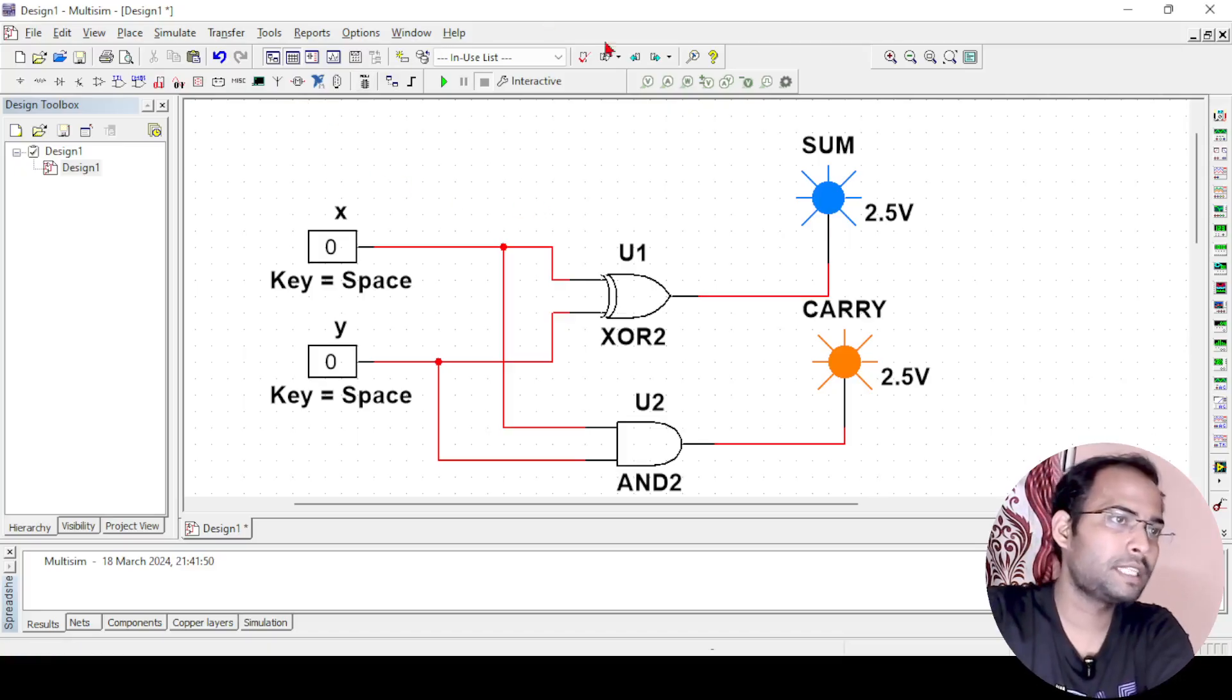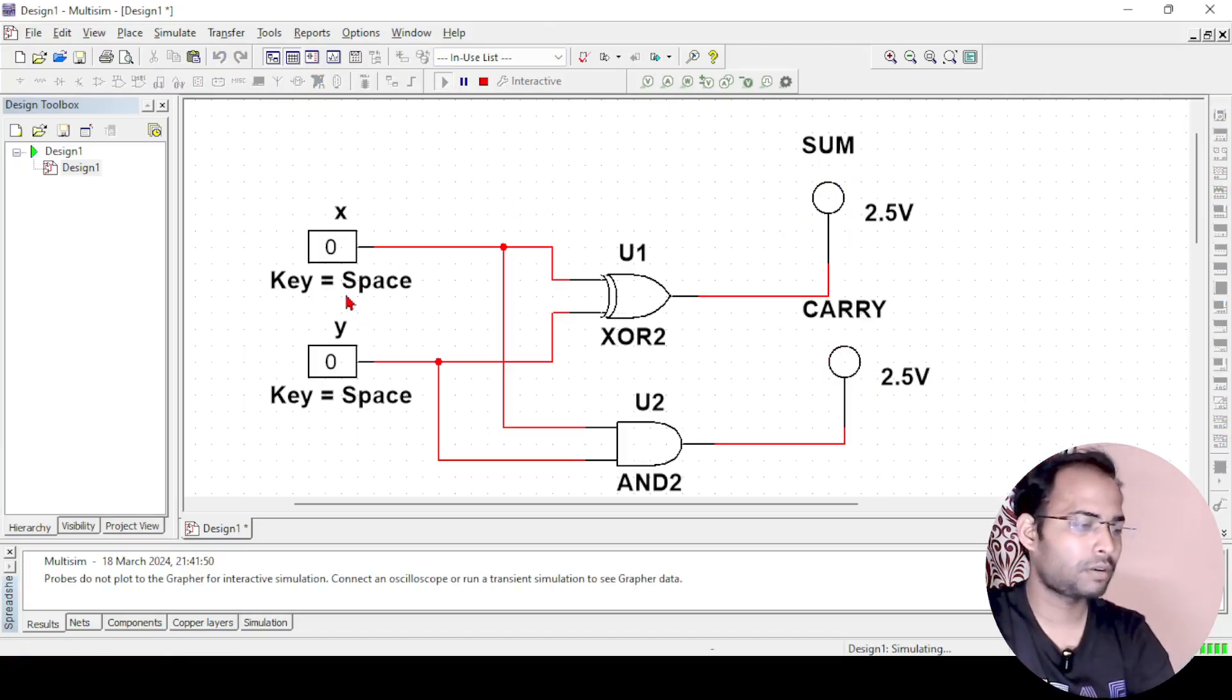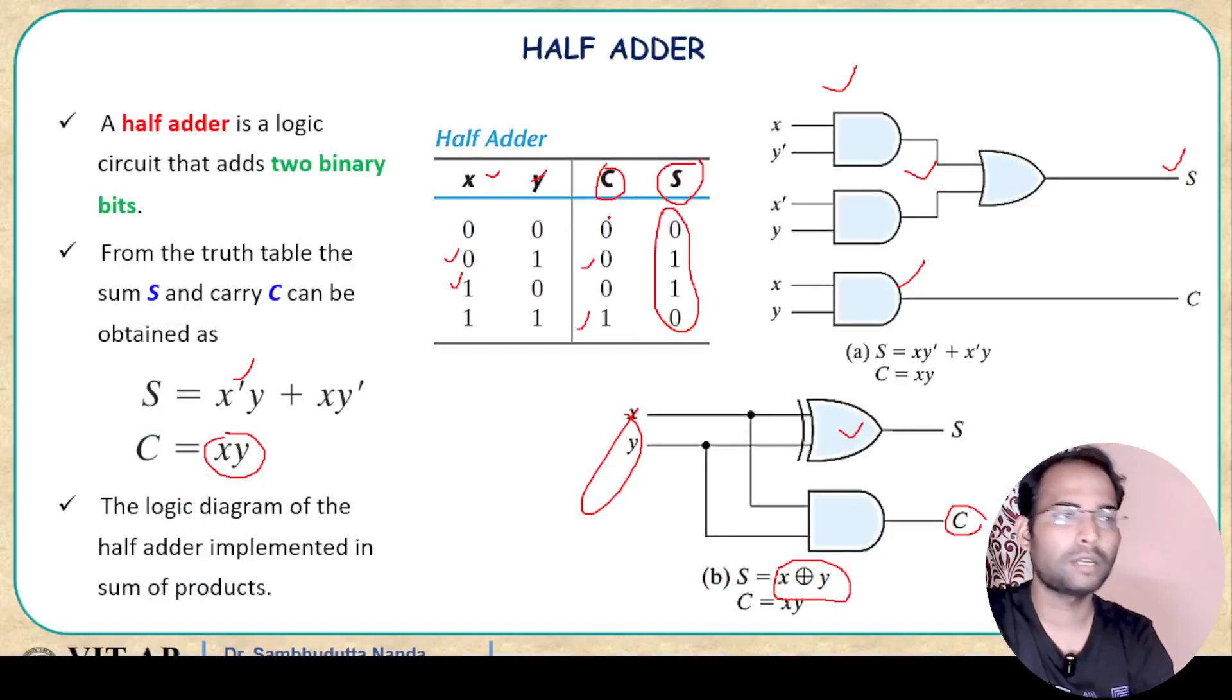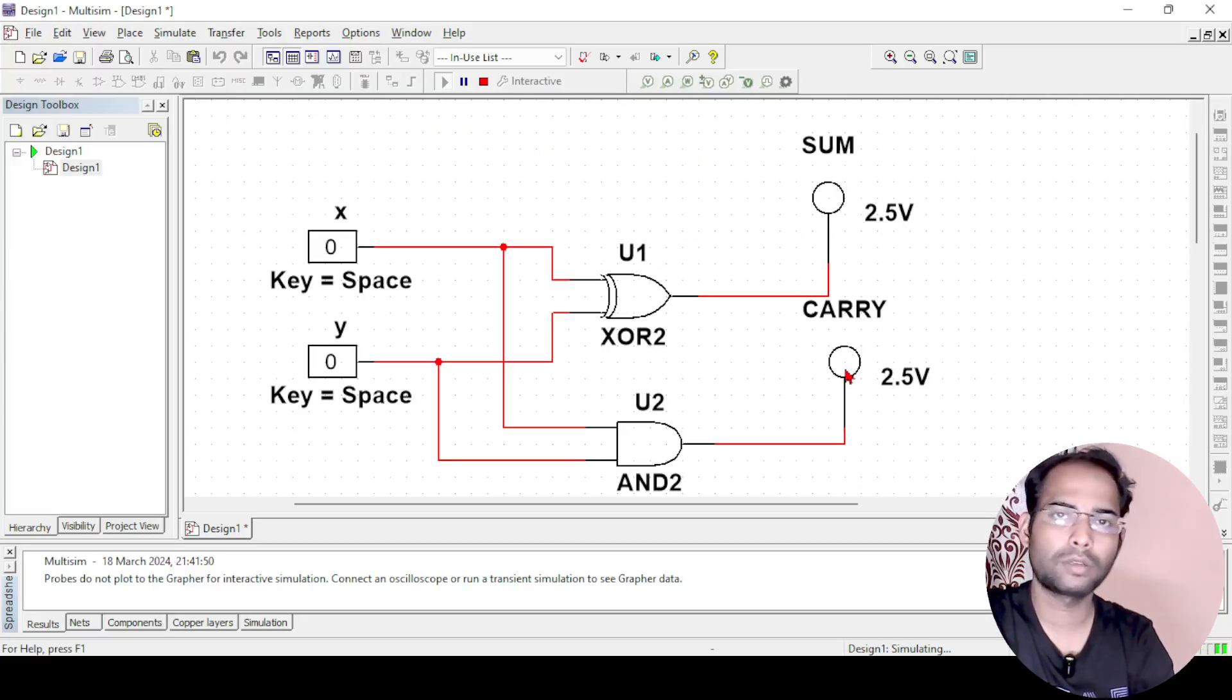So, let us say if I simulate the circuit now. First is 0 plus 0, so 0 plus 0 according to the truth table, 0 plus 0 sum is 0, carry is 0. So no glowing is there, the probe is not glowing here. Now if I make x equals to 1, you can see sum, the blue is now glowing that means sum is 1 and carry is 0.